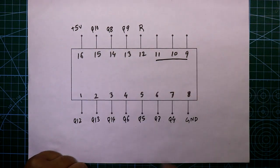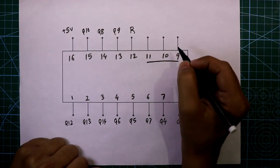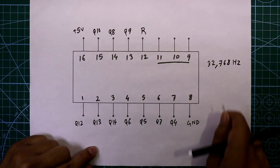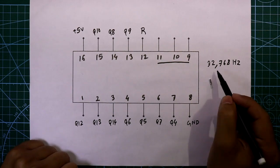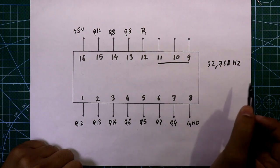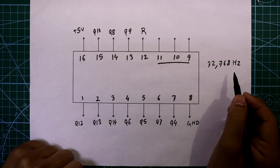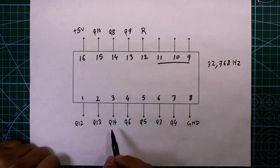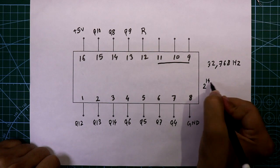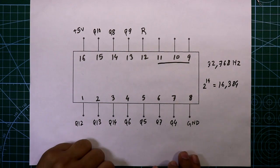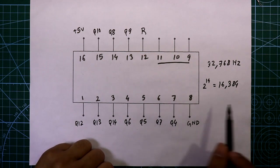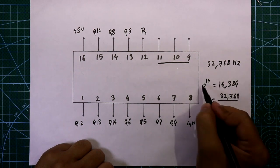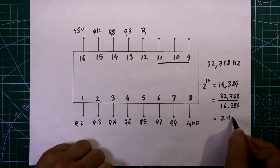Our input frequency is 32,768 Hz from the crystal oscillator. To get 1 Hz, we have to divide by 32,768. However, the maximum output available on this IC is Q14, which means 2 to the power 14 equals 16,384. With this IC we can only get down to 2 Hz, because 2 to the power 14 is just half of 32,768 — dividing by it gives 2 Hz.